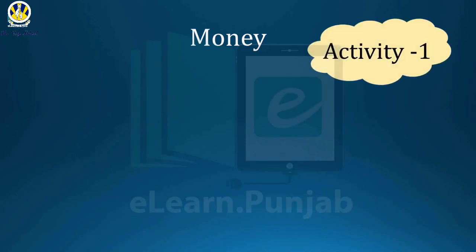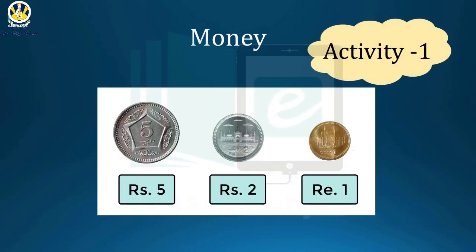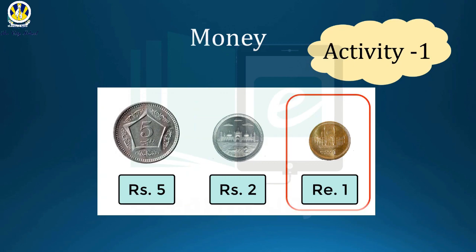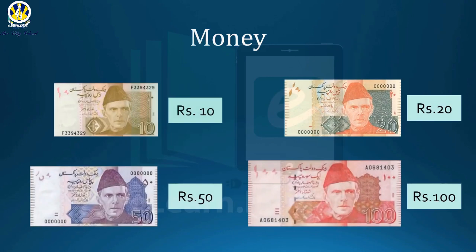Now come to activity number one, in which you can see some coins: a coin of rupees five, a coin of rupees two, and a coin of rupees one. Also, these are some notes which are used in daily life.